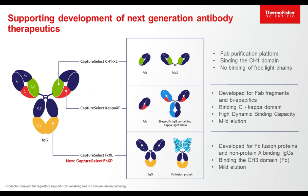We developed a suite of three different resins binding to three different domains. First, the CH1-XL product, which binds to the CH1 domain of antibodies, making it an ideal platform for FABs because it doesn't bind to free light chains — so you immediately purify your FAB in a single one-step process. This is independent of whether it's a Kappa or Lambda FAB, so it would purify all antibody fragments.